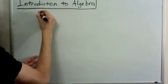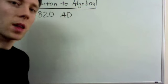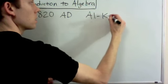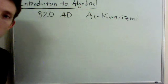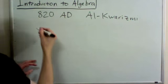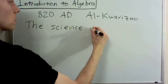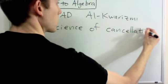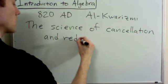Around the year 820 AD, a Muslim mathematician by the name of Al Khwarizmi wrote a book called The Science of Cancellation and Reduction.